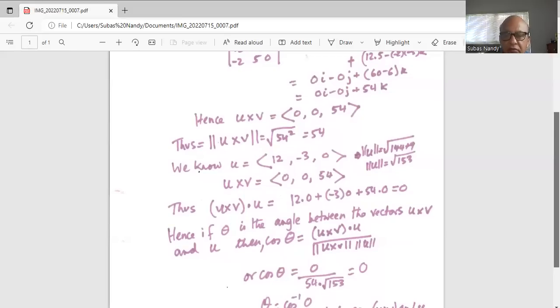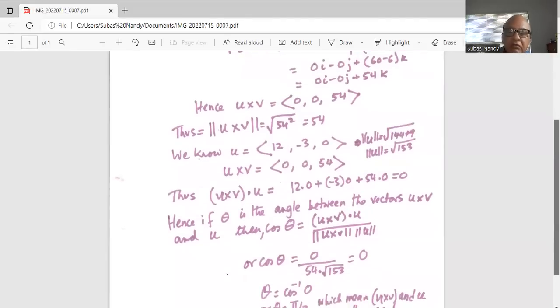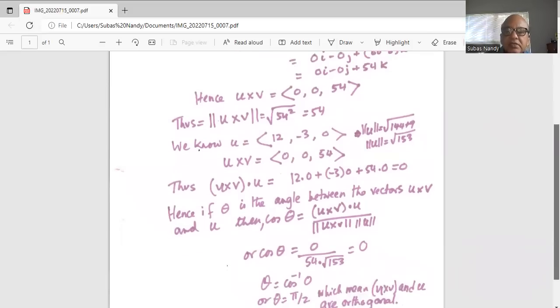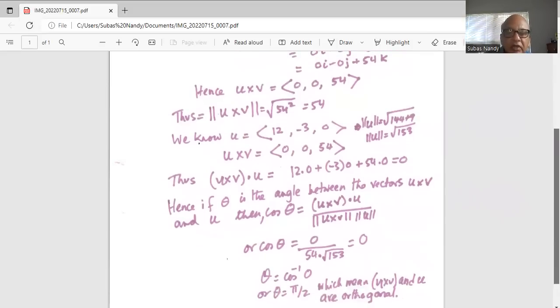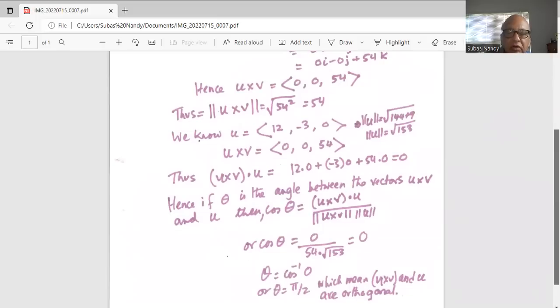But we know the dot product with u is 0. So it's 0 divided by 54 square root of 153, which is 0. So theta is cosine inverse 0, and that is equal to pi by 2, which means u cross v and u are orthogonal.